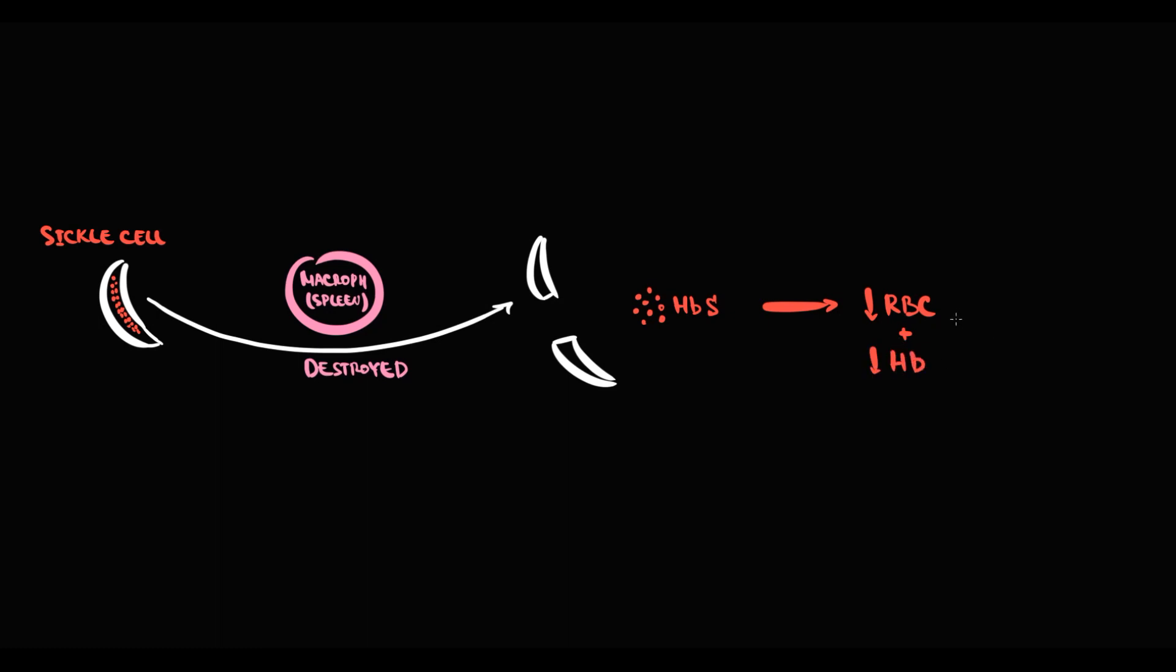First of all, because sickle cells are pathological, macrophages in the spleen see them as antigens. And because macrophages in the spleen are responsible for filtration of blood from pathological substances, once they see sickle cells, they phagocytose them and destroy them. As a result, hemoglobin S is released into the blood, and the amount of red blood cells and hemoglobin decrease. So normocytic anemia develops.